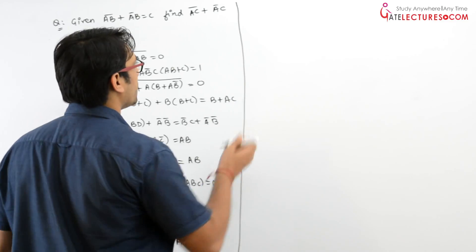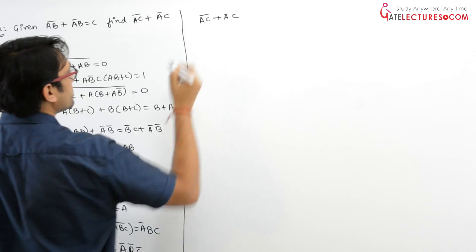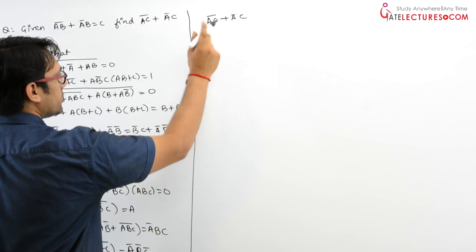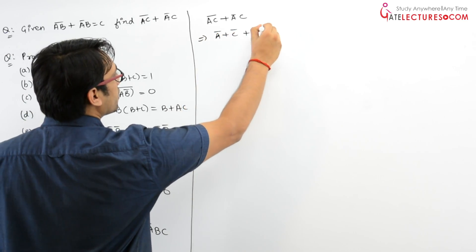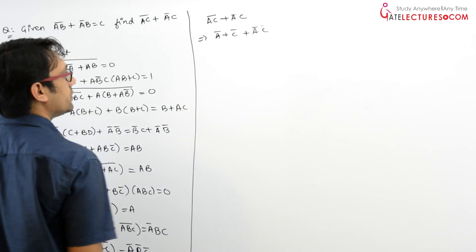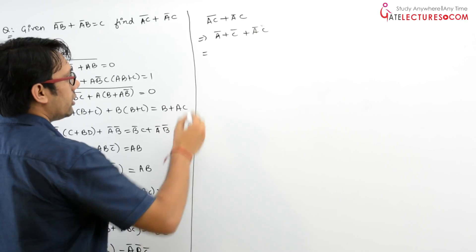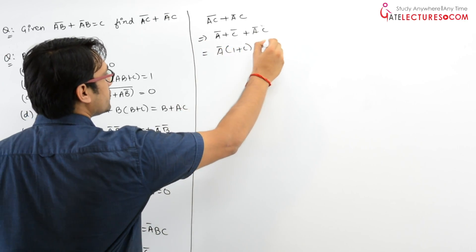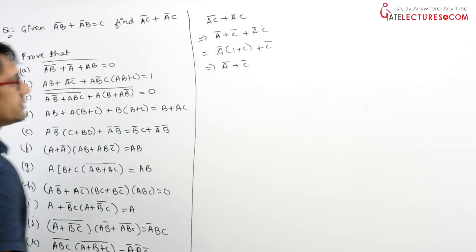So let us take this expression: AC whole complement plus A complement C. You can apply De Morgan's law here, so it can be written as A complement plus C complement plus A complement C. Taking A complement as common, it becomes A complement times (1 plus C) plus C complement, which is equal to A complement plus C complement.